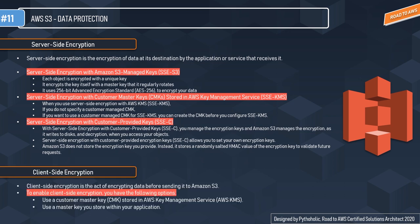For client-side encryption, you encrypt data before sending it to Amazon S3. As a user, you encrypt your data before uploading it — you have the key, you encrypt the data, and then upload it. To enable client-side encryption you have two options: first, you can use the customer master key stored in AWS Key Management Service — AWS KMS. Second, if you want to use your own key, you can use a master key stored within your application.